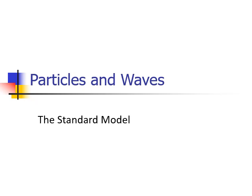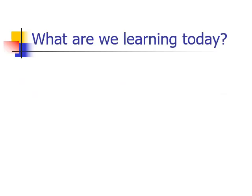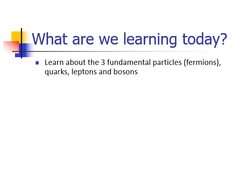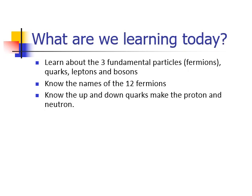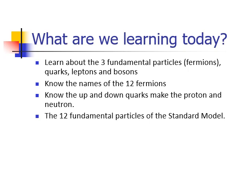Welcome to this video about the standard model. Let's have a look at what we're going to learn about. The fundamental particles called fermions are broken down into quarks and leptons and bosons. We'll learn the names of the 12 fermions, and the up and down quarks that make up protons and neutrons, the things that make up matter in our universe.